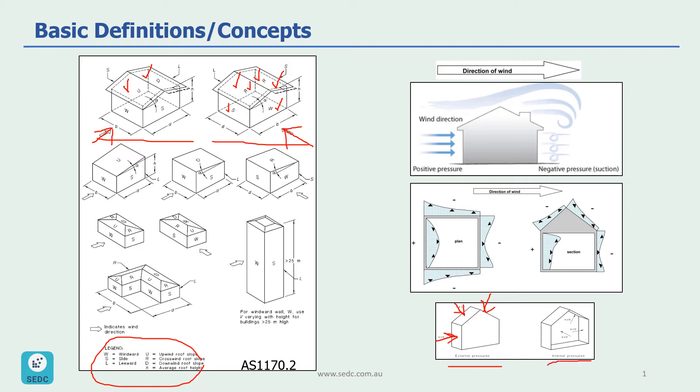For the internal pressure, the concept is the same. Just the wind is blowing from the inside. So for example, from this side, from this side, on the roof, from the rear wall. So all of these are considered as positive pressures.